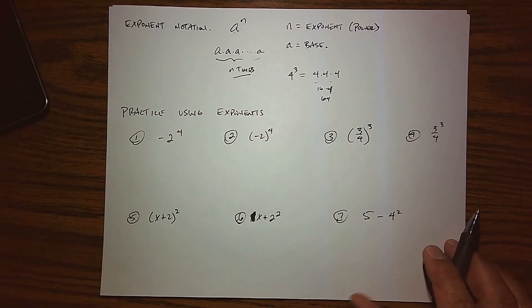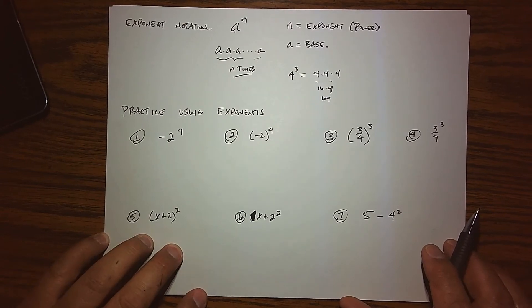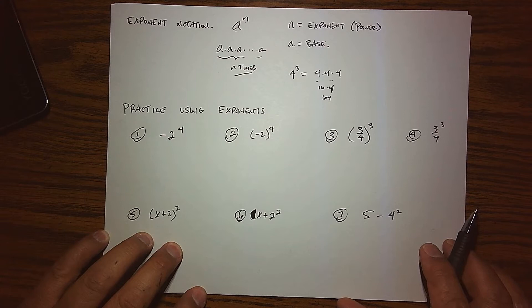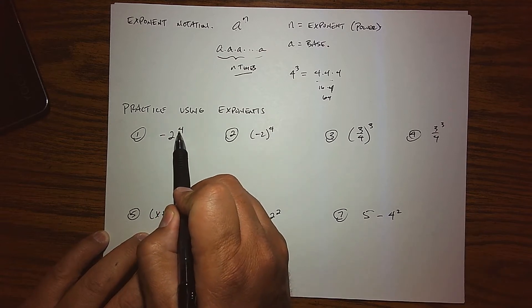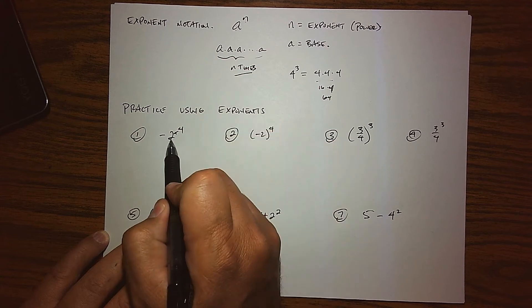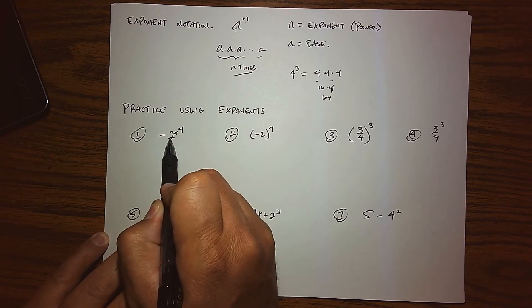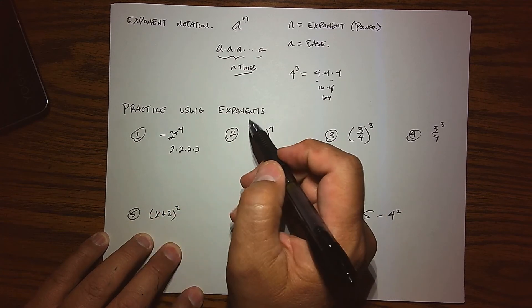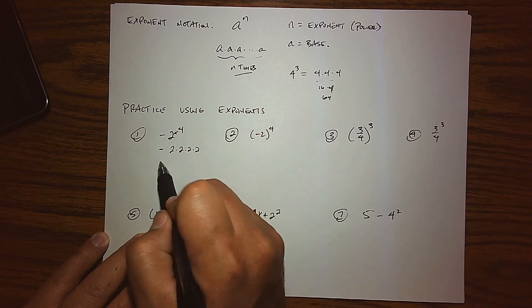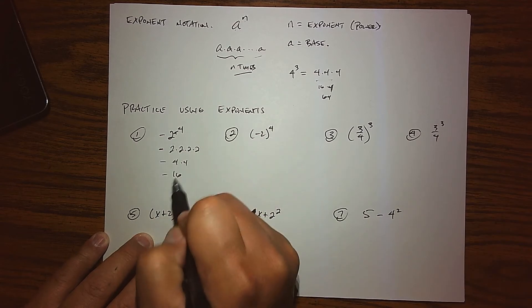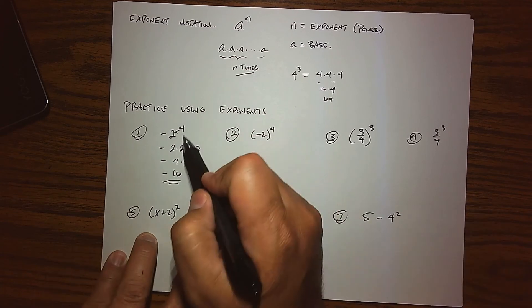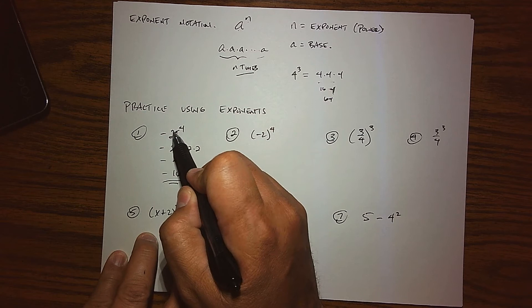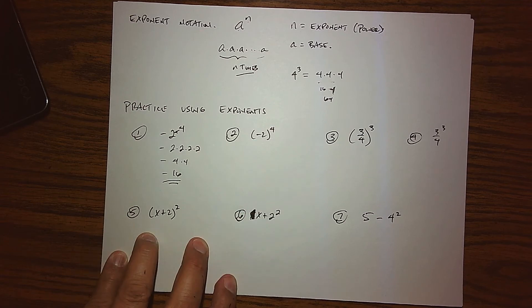Let's evaluate some practice problems using exponents with their base. In the first one, the 4 is sitting right on top of the 2, so the 2 is working as the base. We read this as the opposite of 2 to the fourth power. So 2 to the fourth power would be 2 times 2 times 2 times 2, and then we take its opposite. When you multiply this together you get 4 times 4, and the result is negative 16. Whatever the exponent is sitting directly on top of serves as your base and needs to be repeatedly multiplied.